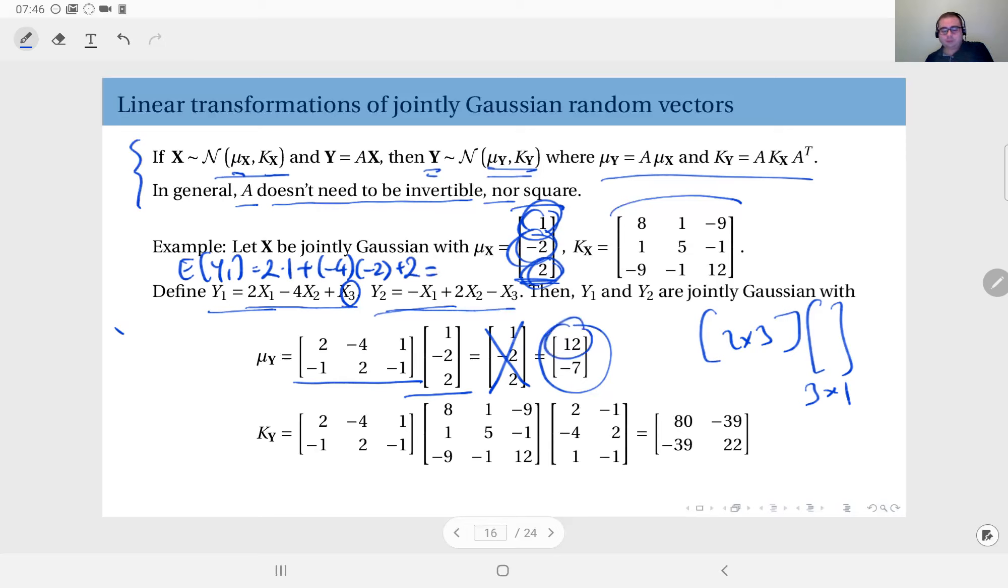This operation is the exact same thing as the product of this vector by this vector. You see this expression is just the matrix form of what you would have done normally. So we have obtained the mean vector here.